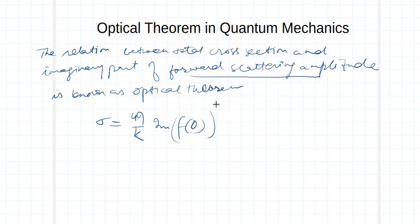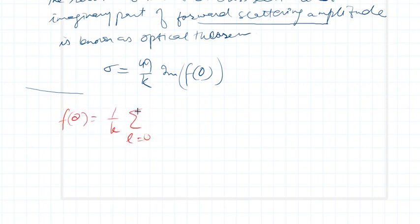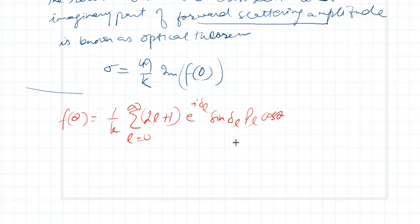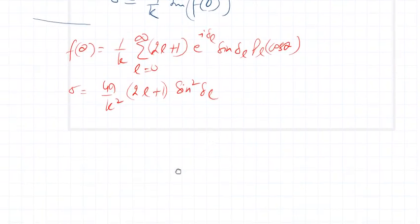Let me recall the important results of phase shifts to prove this. As we know, f(θ) is equal to (1/k) times the summation over L from 0 to infinity of (2L+1) e^(iδ_L) sine(δ_L) P_L(cos θ). And sigma is equal to (4π/k²) times the summation of (2L+1) sine²(δ_L), as derived in earlier lectures.